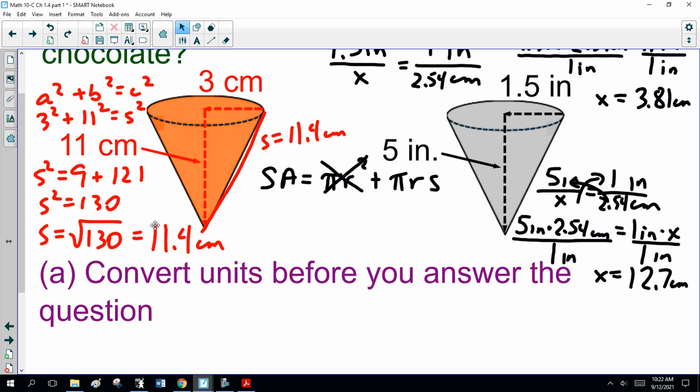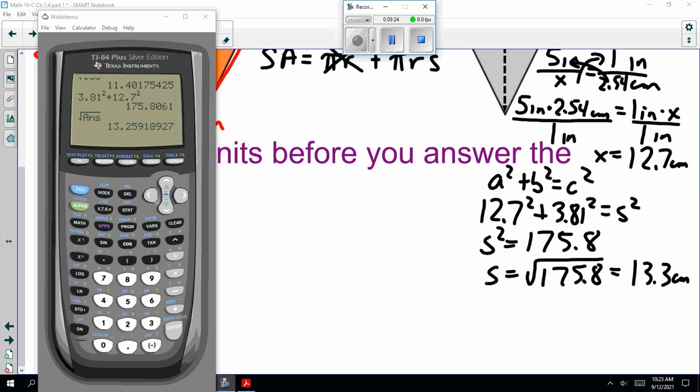Now, here, we've got to figure out the slant height for the other. Actually, this is getting a long recording. I'm going to pause the recording. You guys are going to figure out the slant height for this one. Then, we're going to come back and compare surface areas. Okay, ladies and gentlemen. I got a slant height of 13.3 centimeters. 13.25, yeah, close enough. Don't round off until we get to the final answer.